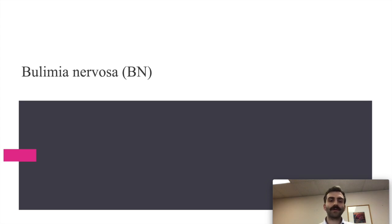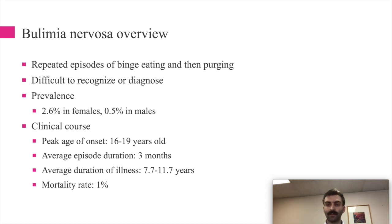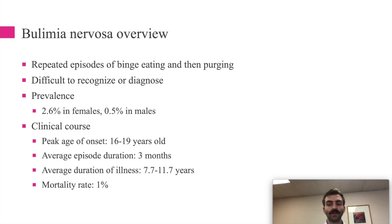Bulimia nervosa includes repeated episodes of binge eating followed by purging — it's like a two-sided coin. It's difficult to recognize because these behaviors are done secretively, and people with bulimia nervosa are often at a normal body weight with a normal BMI. Prevalence is again higher in females compared to males. Peak age of onset is 16 to 19 years — late teens, matching what we saw with anorexia. Average episode duration is three months, shorter than the eight-month anorexia average. Duration of illness spans years, and the mortality rate is around 1%, significantly lower than anorexia's.